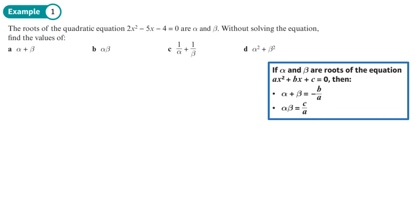Here we've got the roots of the quadratic equation 2x squared minus 5x minus 4 equals 0 are alpha and beta. Without solving the equation, we want to find the sum of the roots, the product of the roots, add the reciprocals together, and work out alpha squared plus beta squared. The first thing I would do is write down the values of A. So A is 2, B is negative 5, and C is negative 4.